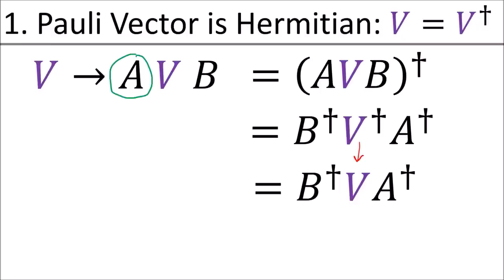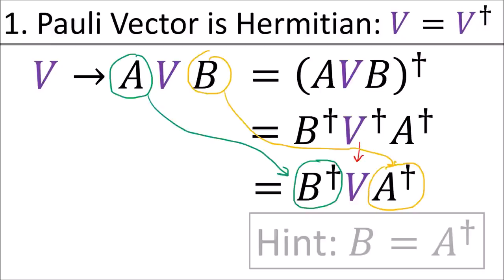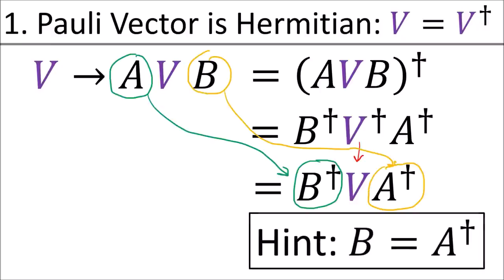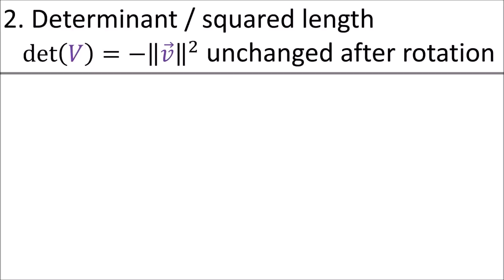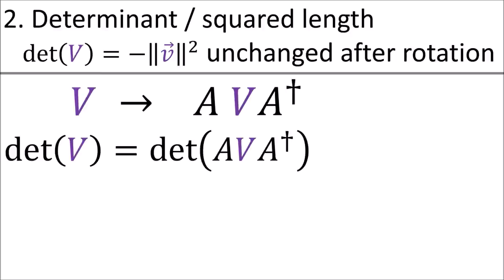Since polyvectors are Hermitian, the resulting polyvector after the transformation should also be Hermitian. Remember, the Hermitian conjugate of a product is the product of the individual Hermitian conjugates in the reverse order. Since v equals v dagger, we get this formula. We can use this as a hint to assume that the B matrix should equal A dagger, so our transformation looks like A v A dagger.